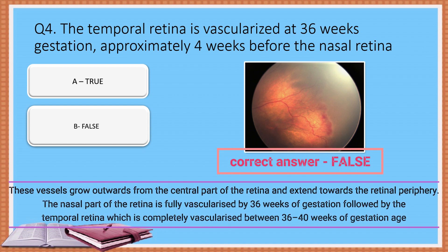The retinal vessels grow outwards from the central part of the retina and extend towards the retinal periphery. The nasal part of the retina is fully vascularized by 36 weeks of gestation, followed by the temporal retina, which is completely vascularized between 36 to 40 weeks of gestational age.